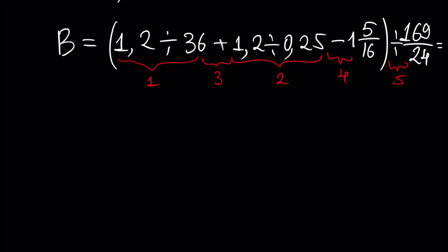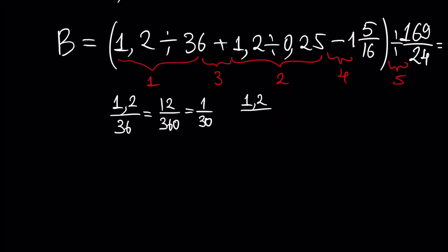The first operation will be 1 and 2 over 36. If we multiply both sides by 10, it will be 12 over 360. And when we divide both sides by 12, it will be 1 over 30. The second operation will be 1.2 over 0.25. If we multiply both numerator and denominator by 100, it will be 120 over 25. Then we divide both sides by 5, giving us 24 over 5.